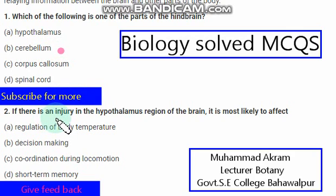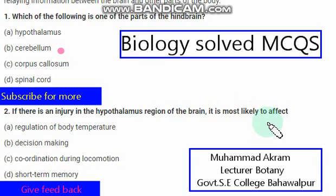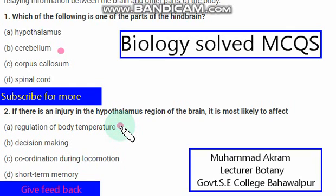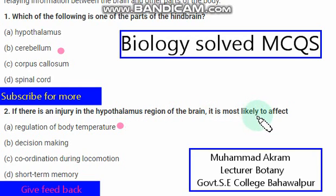If there is an injury in the hypothalamus region of the brain, it is most likely to affect regulation of body temperature. Option A is the right one.